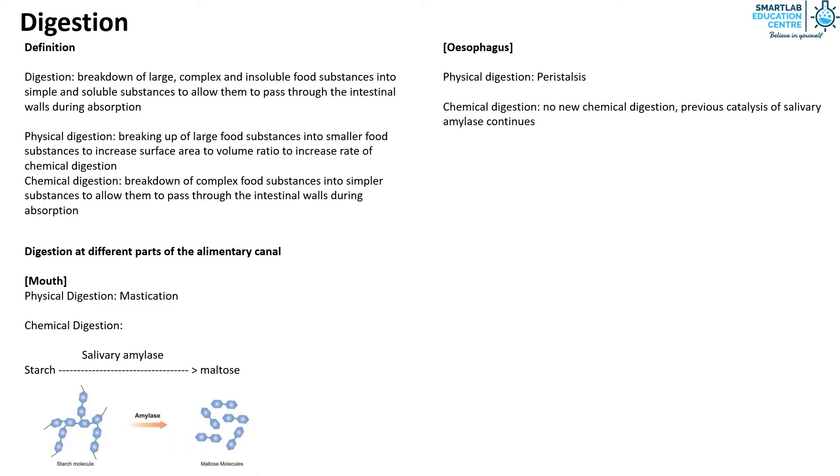In the stomach, the physical digestion occurring is the churning effect due to peristalsis. There are two chemical digestion processes happening. The first is the hydrolysis of protein into polypeptides by pepsin.